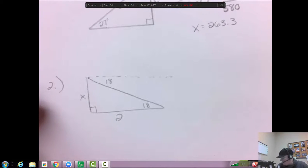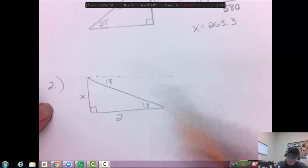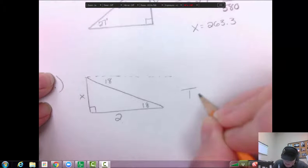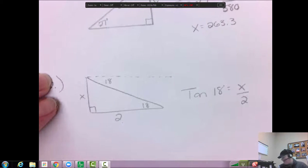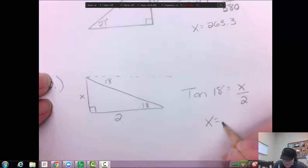Anyway, so let's look at this one. So now I know opposite from the angle of 18 and I know adjacent. So that's going to give us tangent of 18 is going to equal opposite over adjacent. Then again, we have to put that tangent of 18 in our calculator and times it by 2. And we're going to get that x is equal to about .65.